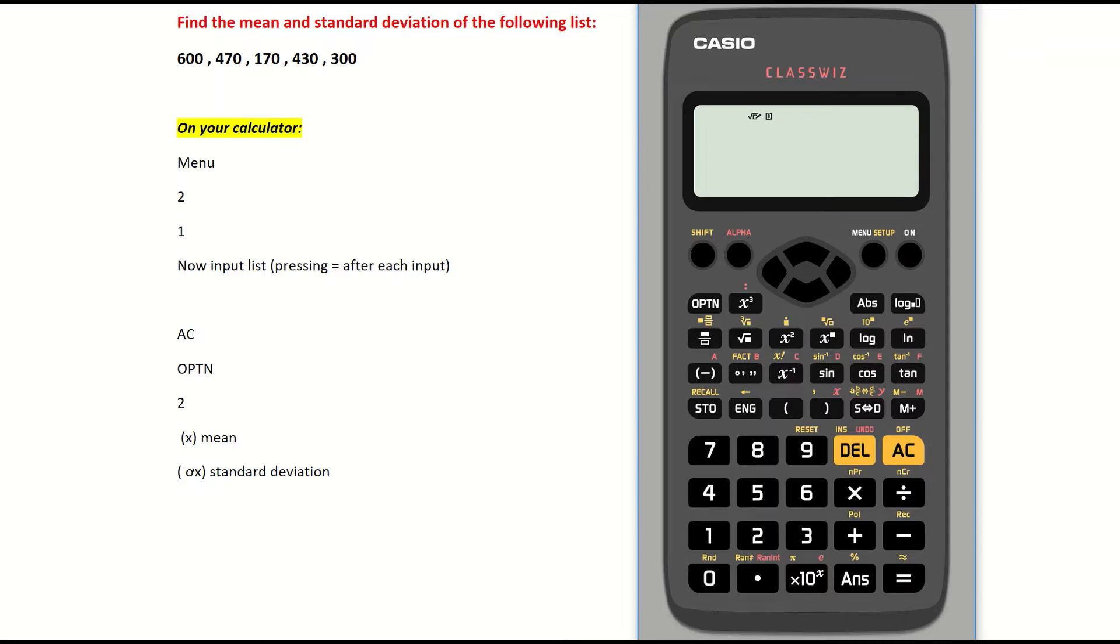I've now deleted anything that has been pre-saved on the calculator. Here is the list of numbers I'm going to find the mean and standard deviation for: 600, 470, 170, 430, and 300.